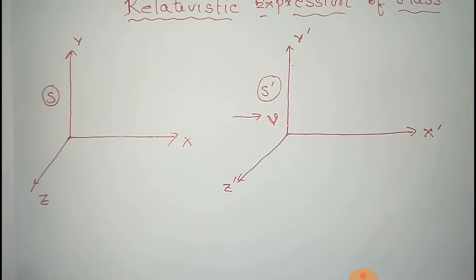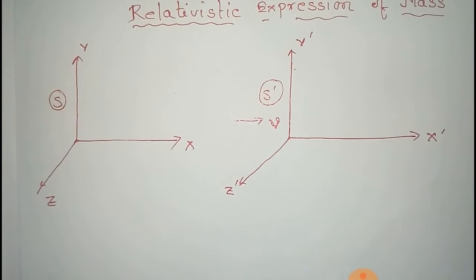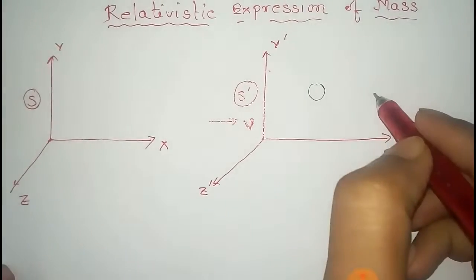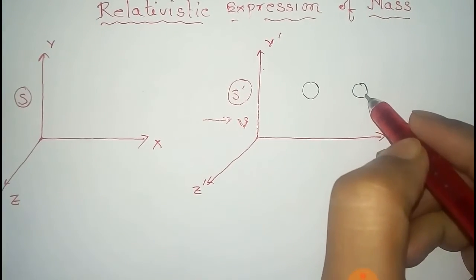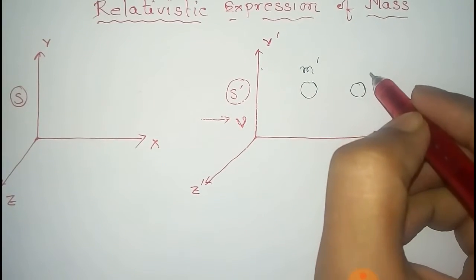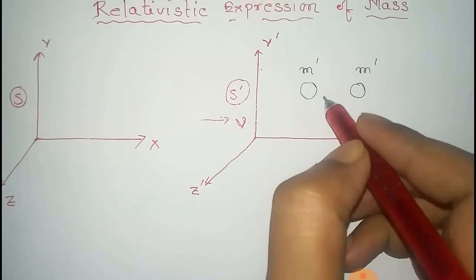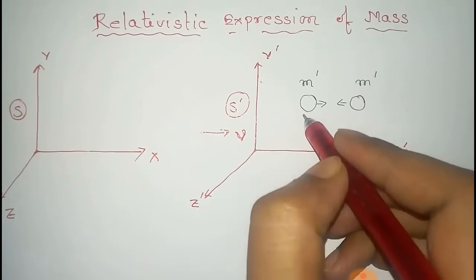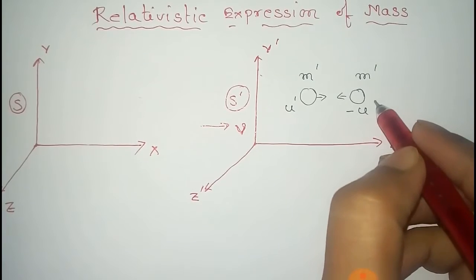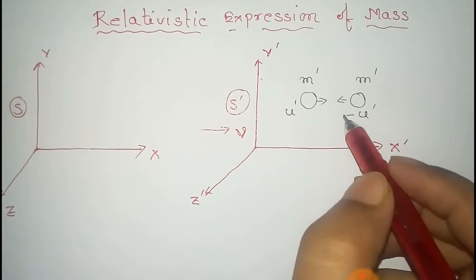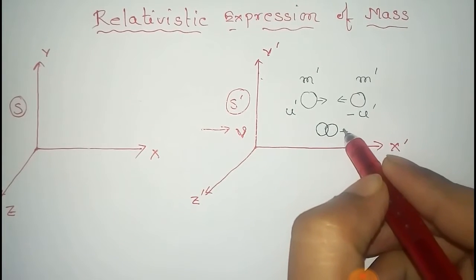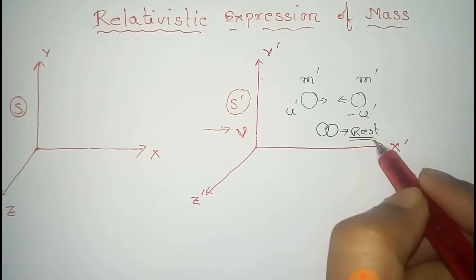Now consider two particles in the S prime frame which are going to collide with each other. The two particles are identical, so they both have the same mass m prime, and both have the same velocity u prime toward each other, so that is plus u prime and minus u prime.